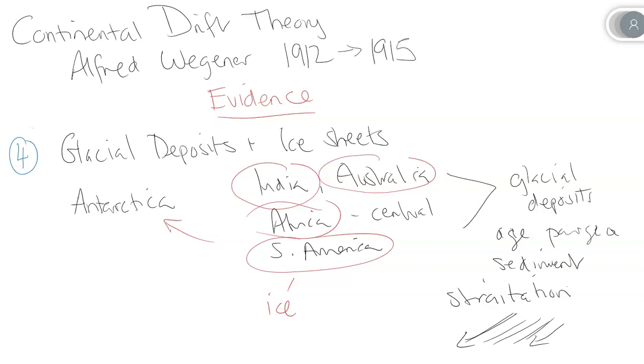So we have the puzzle fit, we have the rock ages, we have the fossil evidence, and the most convincing, the glacial deposits and ice sheets in very currently warm climates that cannot support any kind of substantial ice accumulation because the climate is just too hot. Yet he found it and published the book in 1915. We'll get on to what happened then and a cumulative wrap-up of all the evidence together.